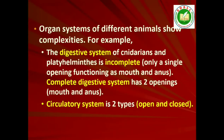Organ systems in different groups of animals exhibit various patterns of complexities. For example, the digestive system in Platyhelminthes has only a single opening to the outside of the body that serves as both mouth and anus, and is hence called incomplete. A complete digestive system has two openings, mouth and anus. The circulatory system may be of two types: open type, in which the blood is pumped out of the heart and the cells and tissues are directly bathed in it, and closed type, in which the blood is circulated through a series of vessels of varying diameters — arteries, veins and capillaries.